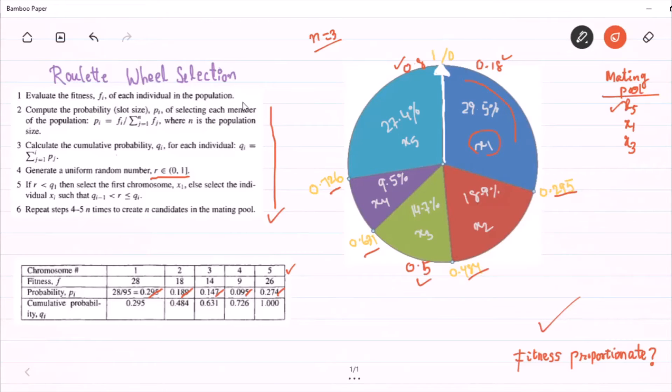With this, we understood this Roulette Wheel selection method in two ways. We discussed this algorithm and the subsequent calculations. Then, we realized the alternative way of understanding this algorithm, that is visualizing the wheel. With this, the Roulette Wheel selection discussion is over. Thank you.